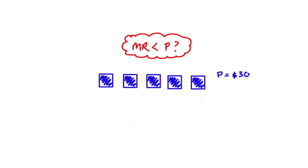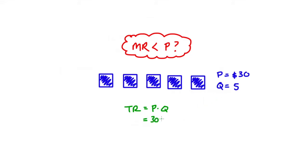Now let's think about the total revenue for my firm. The total revenue is just all of the money that I'm going to get because I'm trading in this market. That's going to be equal to price times quantity — so the number of boxes I'm making multiplied by the price I'm selling them at. So that's 30 times five, which is 150.